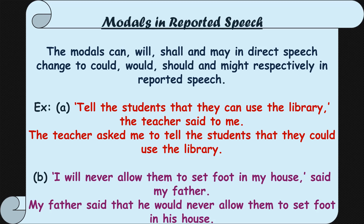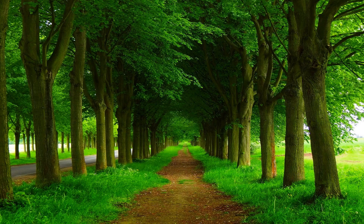Let us recap. We have learned about primary auxiliaries, modal auxiliaries, and secondary auxiliaries. The primary auxiliaries have three types: the be-family — am, is, are, was, were; the have-family — have, has, had; and the do-family — do, does, did.